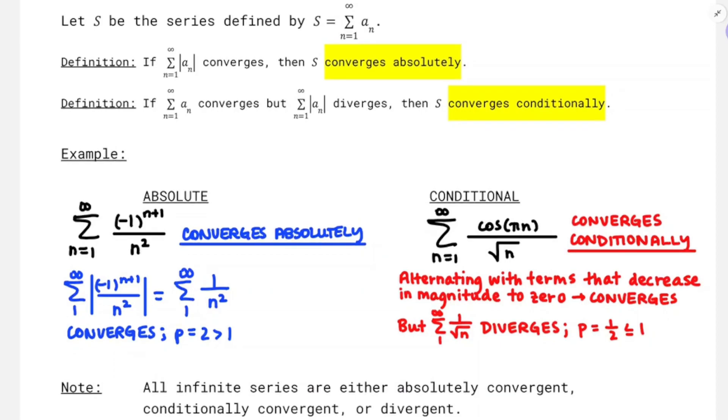Now equipped with those definitions and those couple of examples, I really think you are ready to get out there into the world and determine whether series are absolutely or conditionally convergent, alternating ones at least. So I think that's going to be all for this video. In the next one, I'll get into the alternating series error bound, but I'm trying to keep these short and digestible. So that's going to be all for this video. Thanks for watching.